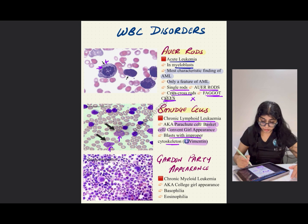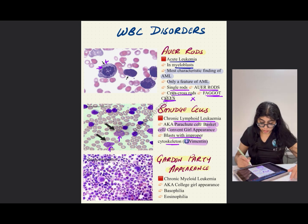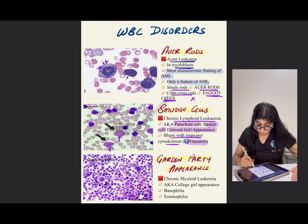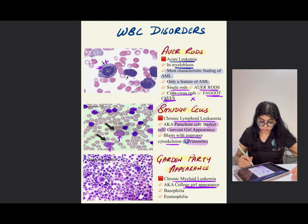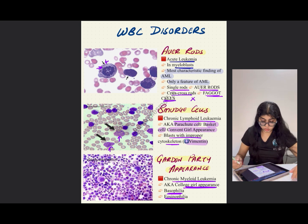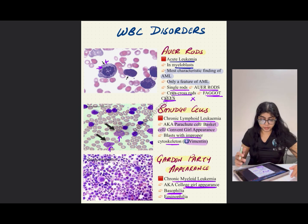Garden party appearance has been asked many times in the exam for chronic myeloid leukemia. It is also known as collegiate appearance. You can see that there is eosinophilia and basophilia, so it looks like the cells are having a party — hence garden party appearance.